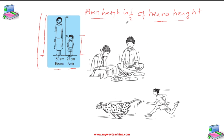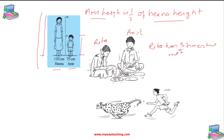Here is another example of how we can compare quantities. This is Rita, and this is Amir. If you see the marbles on Amir's plate and the marbles on Rita's plate, we can say that Rita has 3 by 2 times the marbles that Amir has, or we can say Amir has 2 by 3 part of what Rita has. So that is a way of comparing quantities.